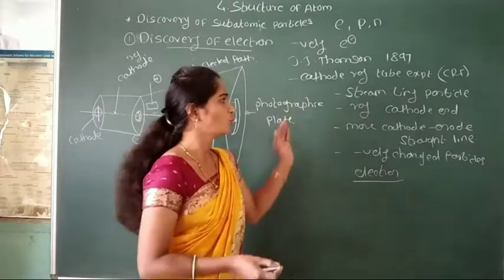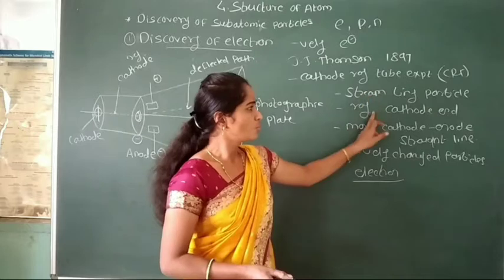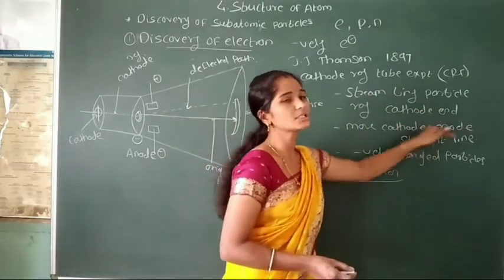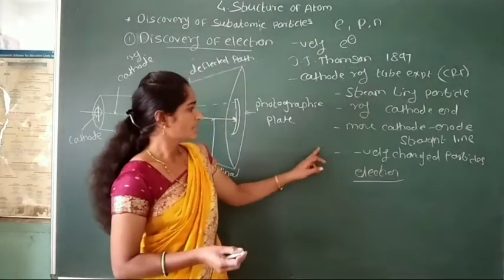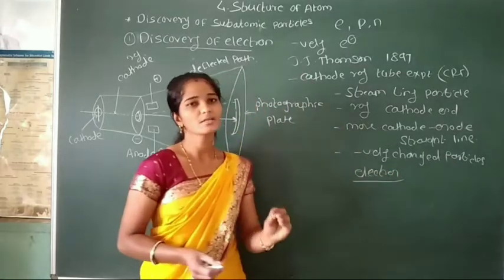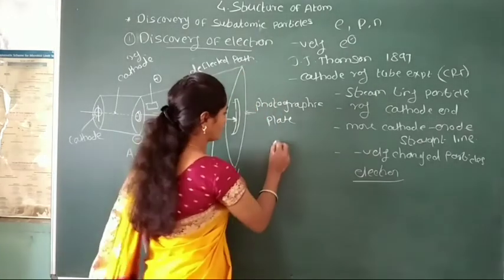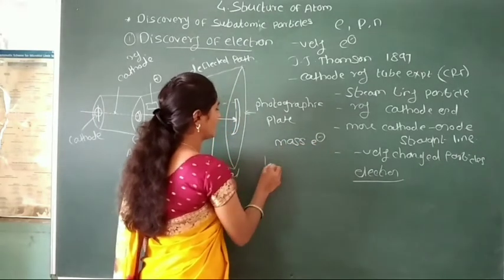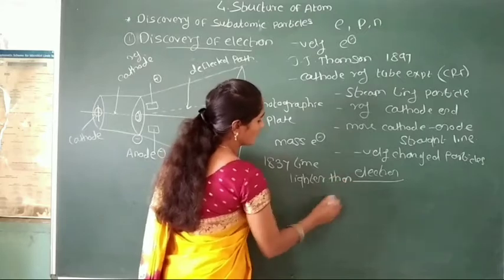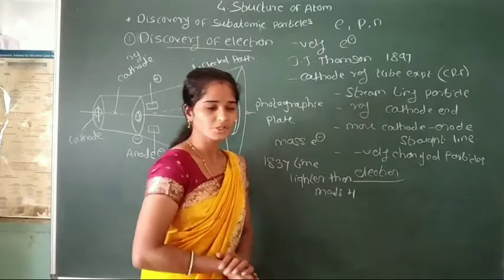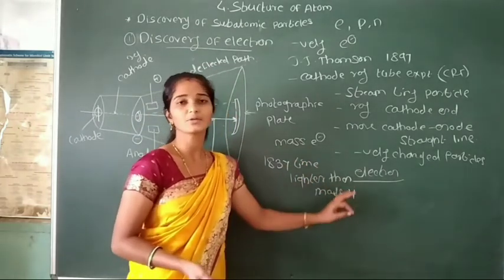Now we see some characteristic properties of these cathode rays. First, this cathode ray is a stream of tiny particles produced at the cathode and migrates from cathode to anode in a straight line. Another characteristic is that these cathode rays are negatively charged particles called electrons. Another characteristic property is that the mass of the electron is 1837 times lighter than the mass of the proton.